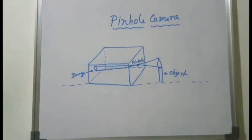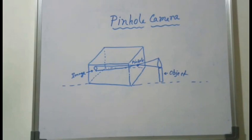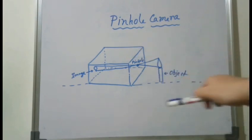Here I have shown the basic diagram of a pinhole camera. Light has many important properties, but the most important are: light needs no medium to travel — it can travel in a vacuum — and the second, most important property is that light travels in a straight line. A pinhole camera is a simple camera without a lens but with a tiny aperture or hole.